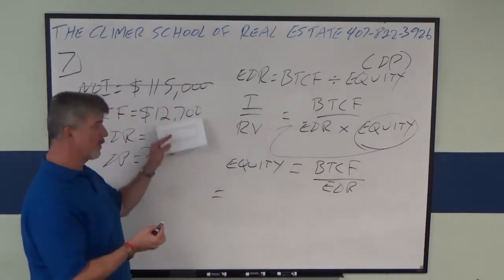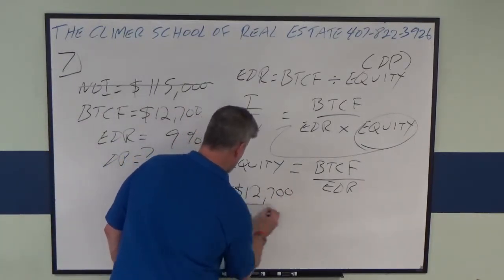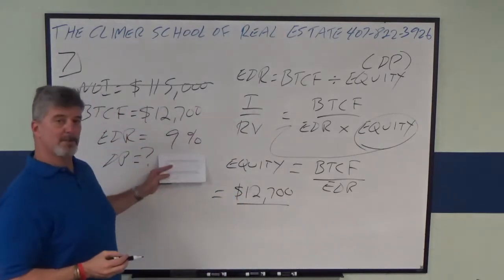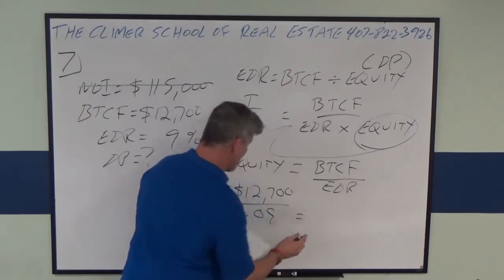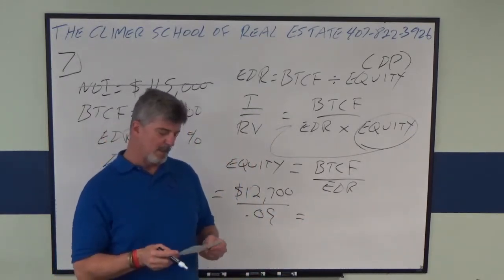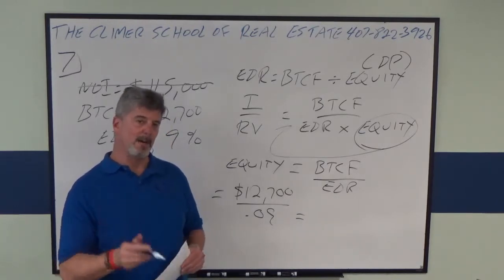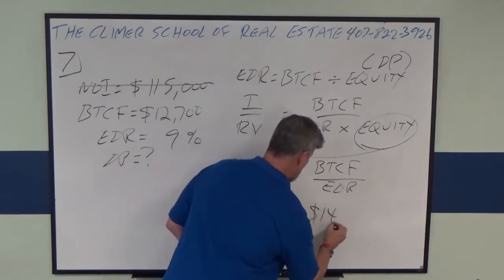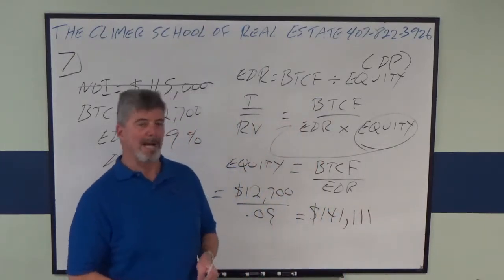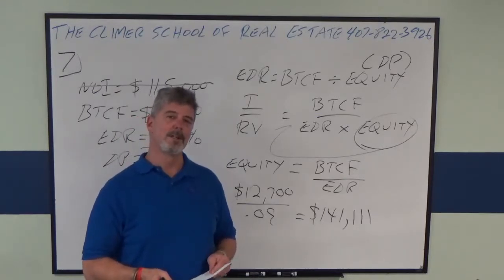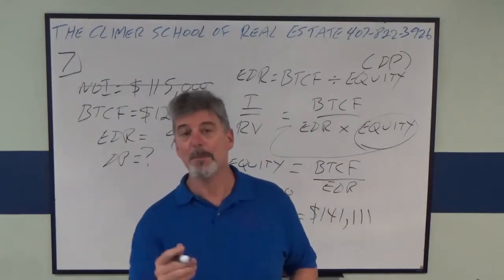It's basically working with a fraction — top number divided by the bottom number. So equity, which is your down payment, would be $12,700 divided by the investor's requested equity dividend rate of 0.09. If you put those in your calculator, you get $141,111, rounded to the nearest hundred: $141,100.